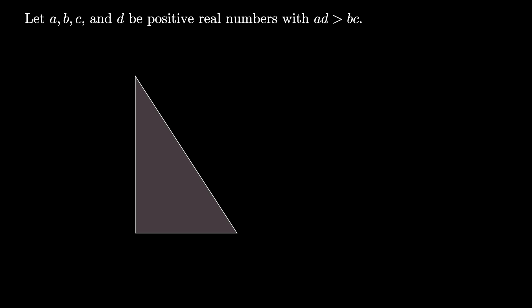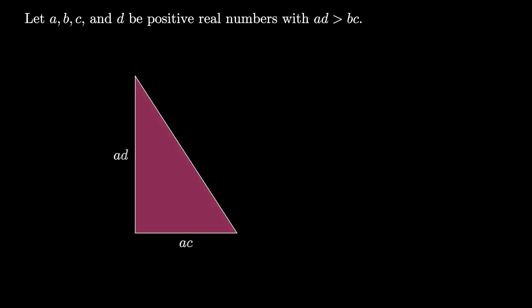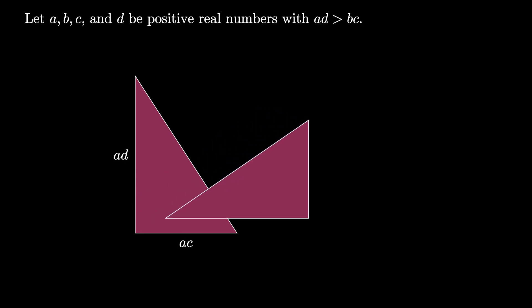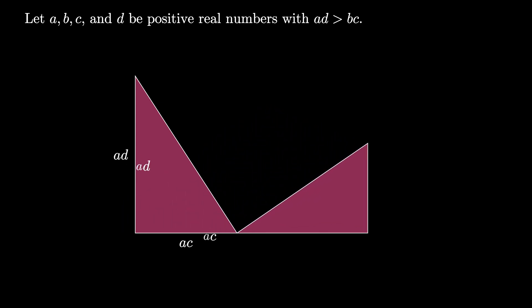Then draw a right triangle with legs of length AD and AC. Rotate a copy of this triangle and scale by the value B over A, creating a right triangle with legs of length BC and BD.